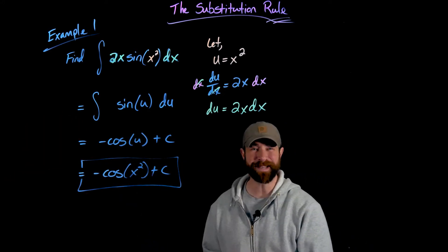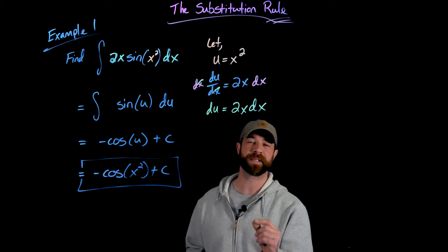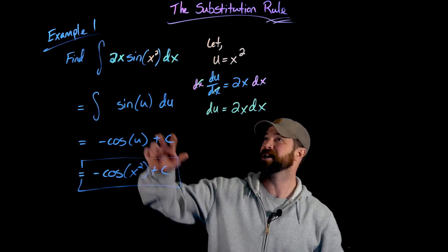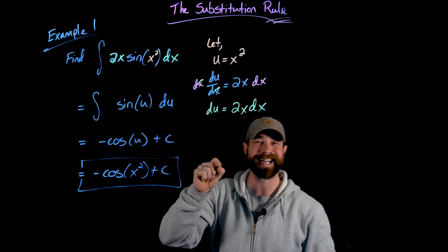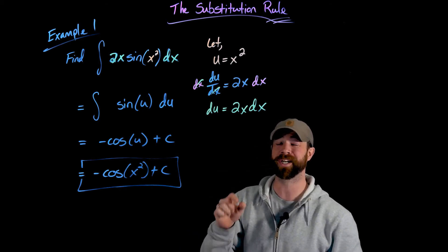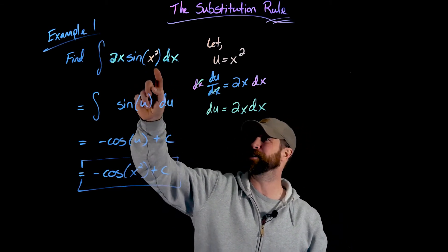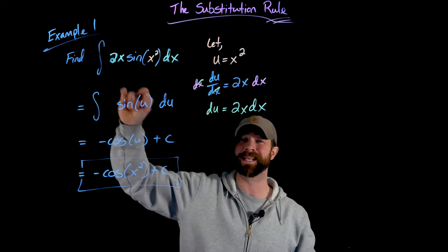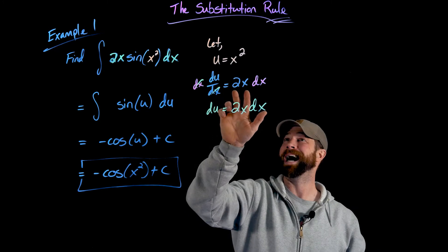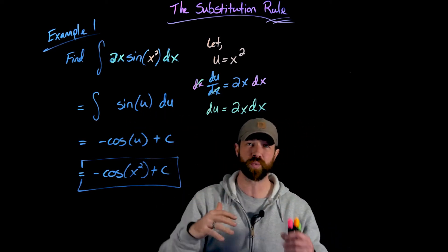As you get deep into integration, you'll see substitution used in really inventive ways. The basic approach is: first ask yourself, is this a composition of functions? Here we have sine composed with x squared. The key signal that tells you to definitely use substitution is when you see the inner function's derivative appearing outside. I saw that 2x and recognized that differentiating x squared gives exactly that 2x factor, which allows me to make the differential replacement and turn this into du.